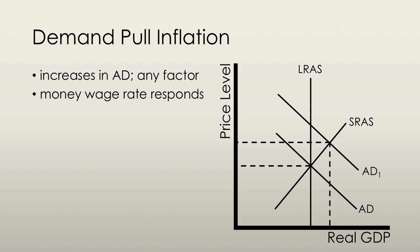An initial increase in aggregate demand will result in a new short-run macroeconomic equilibrium at a higher price level and a higher level of real GDP. Unemployment falls below the natural rate and an inflationary gap is created. It is hard to sustain a higher than potential GDP equilibrium, and a shortage of labour occurs causing the wage rate to rise. This makes the short-run aggregate supply curve shift back to restore long-run equilibrium.